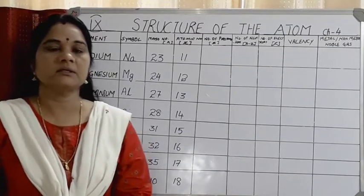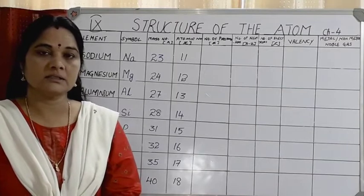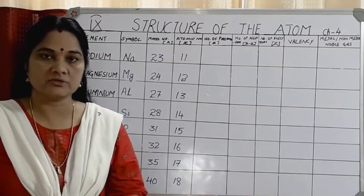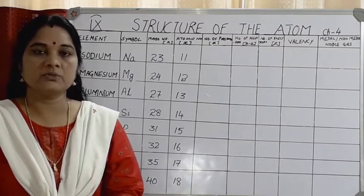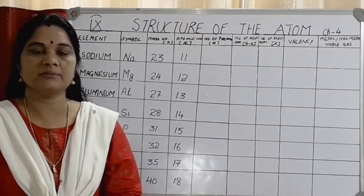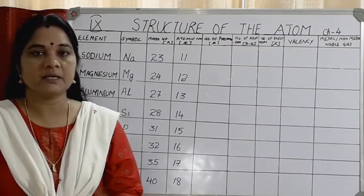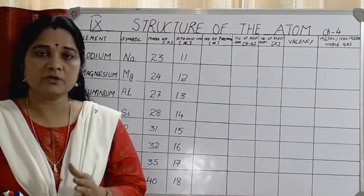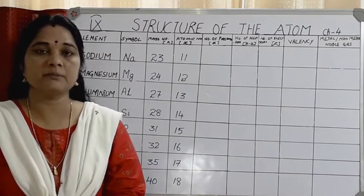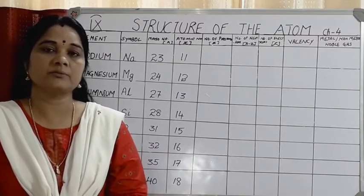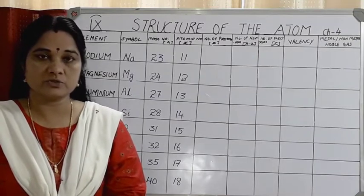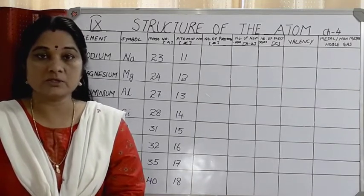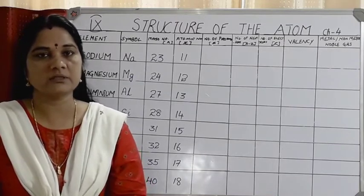Let's recall what we have learnt. Atomic number of an element is nothing but the number of protons in the nucleus of an atom, and the number of protons is equal to the number of electrons. If you know the atomic number, you can easily find the number of protons as well as electrons, because in a neutral atom, the number of positive charges (protons) equals the number of negative charges (electrons). So if there are three protons, there will be three electrons distributed in various shells.